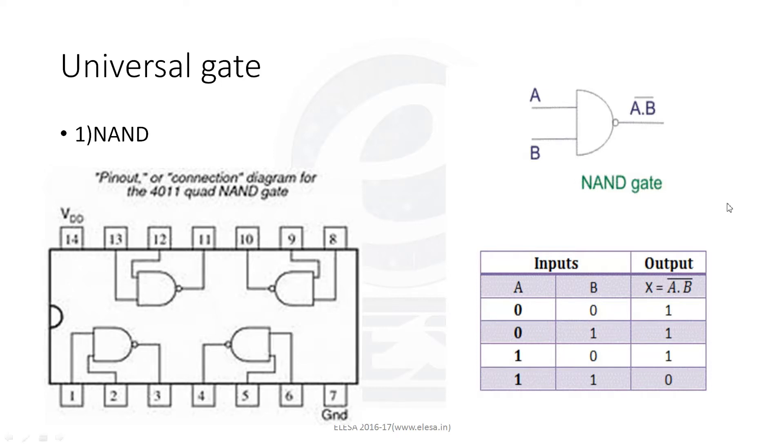NAND gate is the combination of AND gate followed by NOT gate. Its logic symbol is here. This bubble represents the NOT gate. The truth table for this is the complement of AND gate. The IC number for NAND gate is 7400.